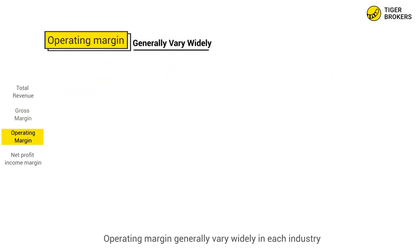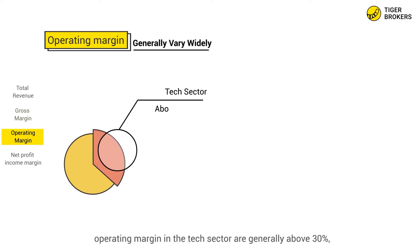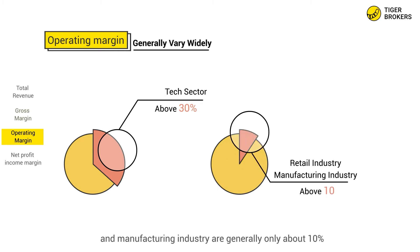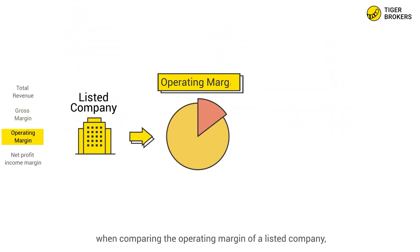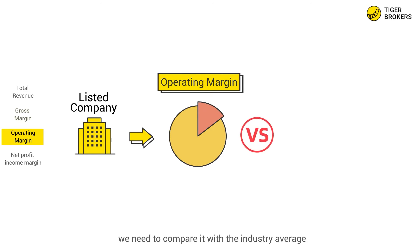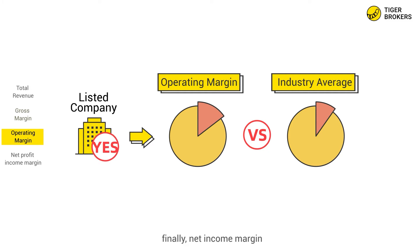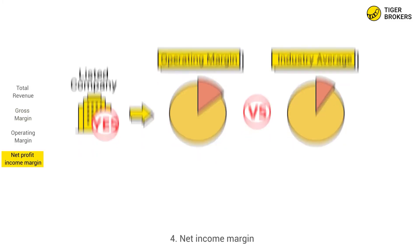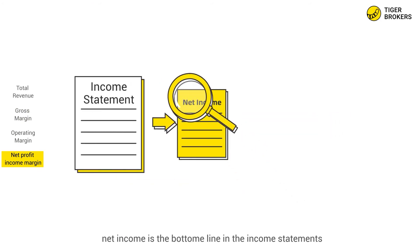Operating margins generally vary widely across industries. For example, operating margins in the tech sector are generally above 30 percent, while those in the retail and manufacturing industries are generally only about 10 percent. Therefore, when comparing the operating margin of a listed company, we need to compare it with the industry average so that we can judge whether the company has a competitive advantage.